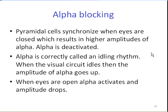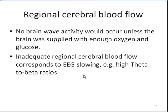Alpha blocking relates to pyramidal cells that synchronize when the eyes are shut, resulting in higher amplitudes of alpha. In effect, alpha is deactivated — alpha is correctly called an idling rhythm. When the visual circuit idles, the amplitude of alpha goes up. When eyes are open, alpha activates and the amplitude drops. Regarding regional cerebral blood flow: no brain wave activity could occur unless the brain was supplied with enough oxygen and glucose. Inadequate regional cerebral blood flow corresponds to EEG slowing — that is, higher amplitudes of theta or high theta-to-beta ratios.